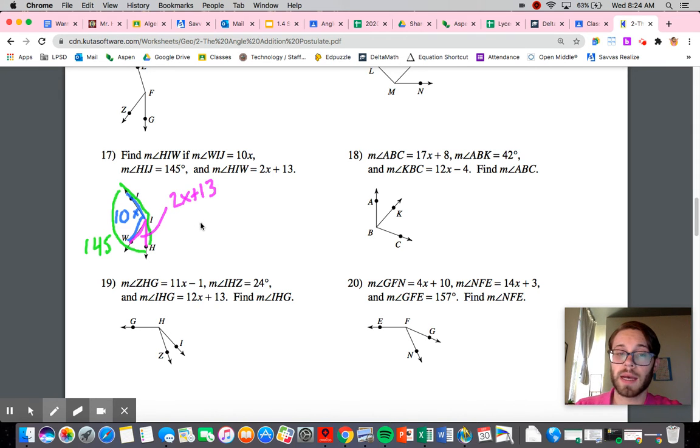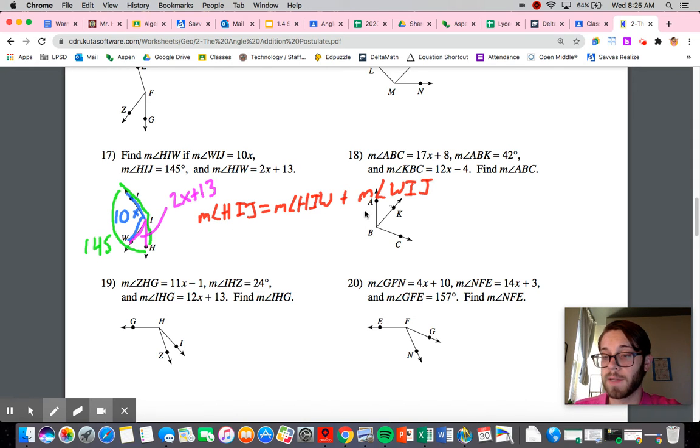the measure of angle HIW and the measure of angle WIJ together to get the measure of angle HIJ. So let me just write that down. So the measure of angle HIJ, that is equal to the sum of the measure of angle HIW plus the measure of angle WIJ. That's what we know. And that's just from the angle addition postulate. That's all it's saying, that the bigger angle is made up of the sum of its parts.